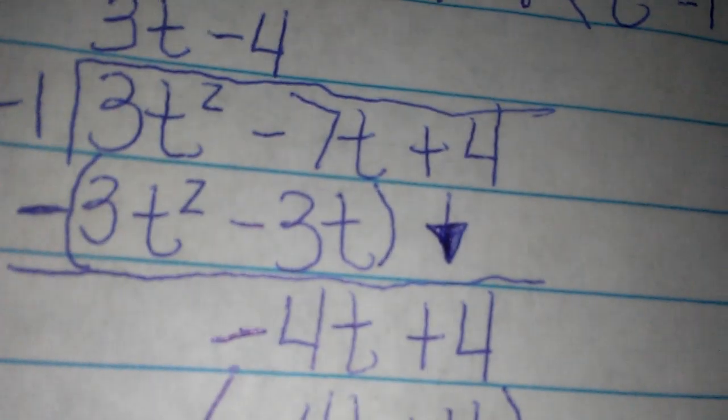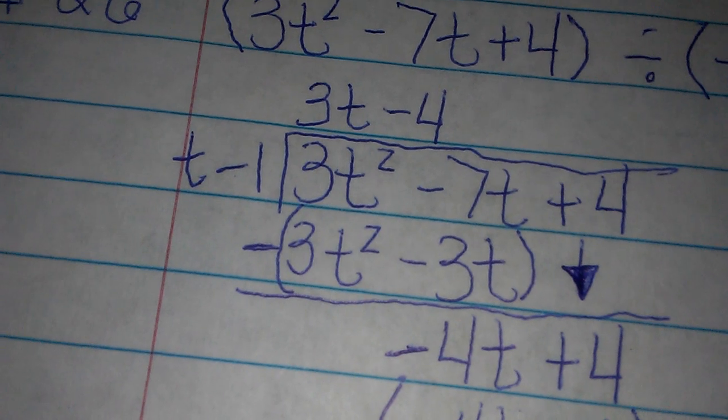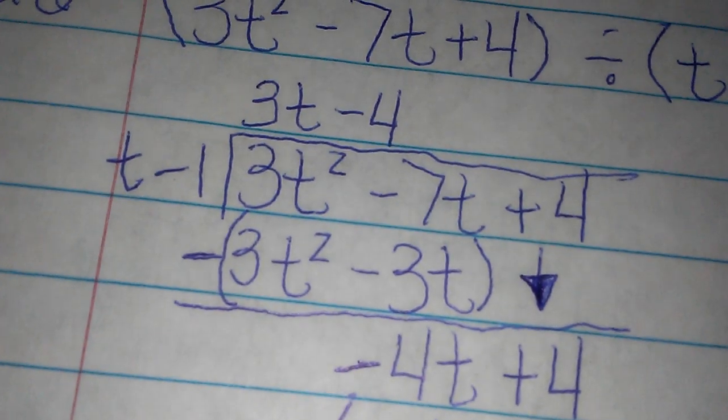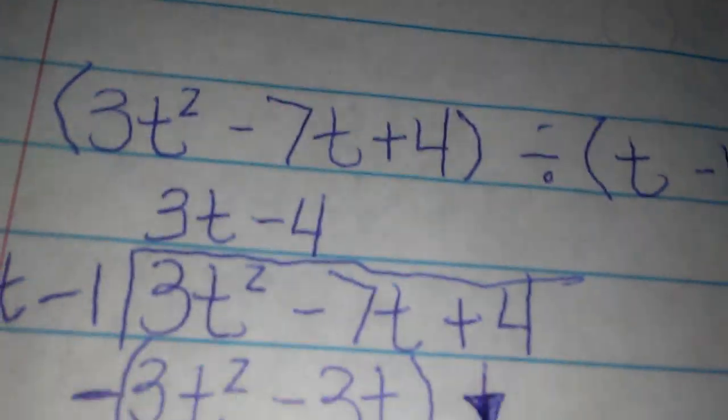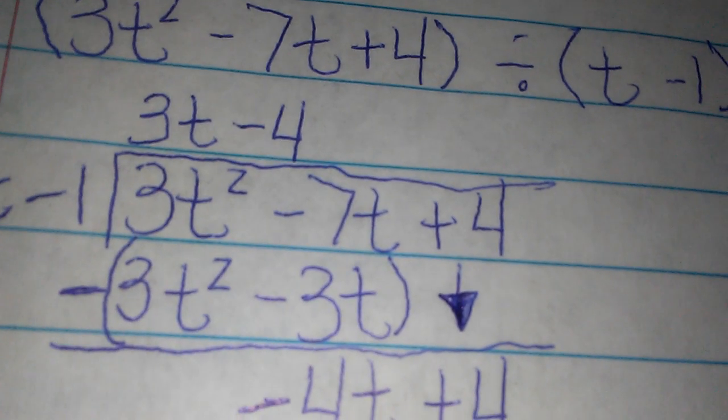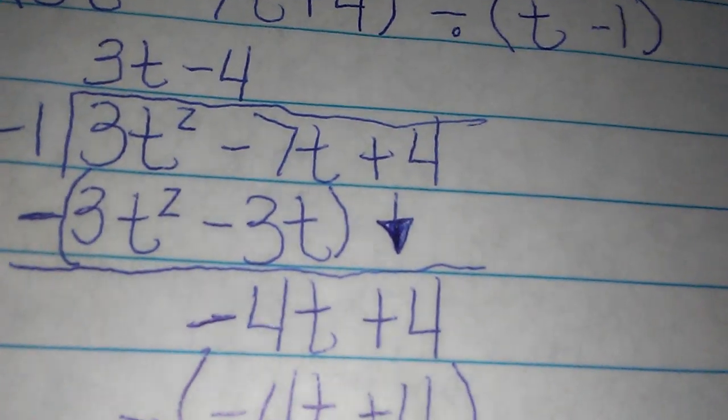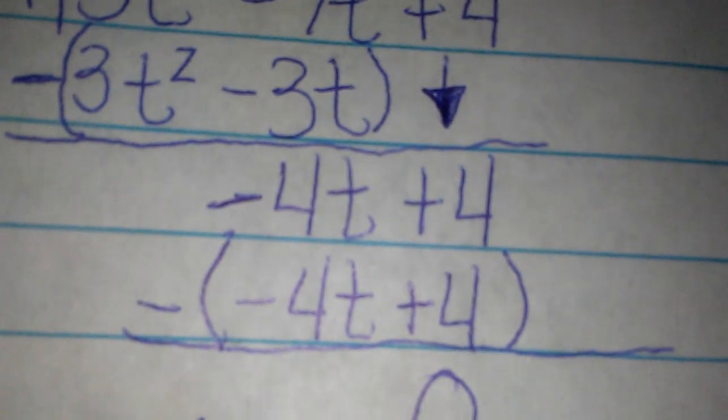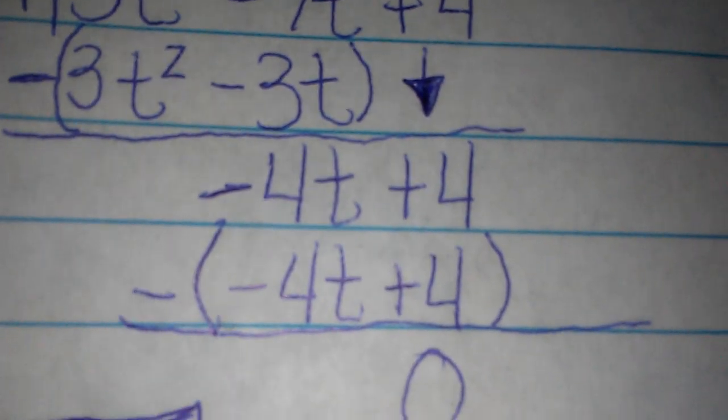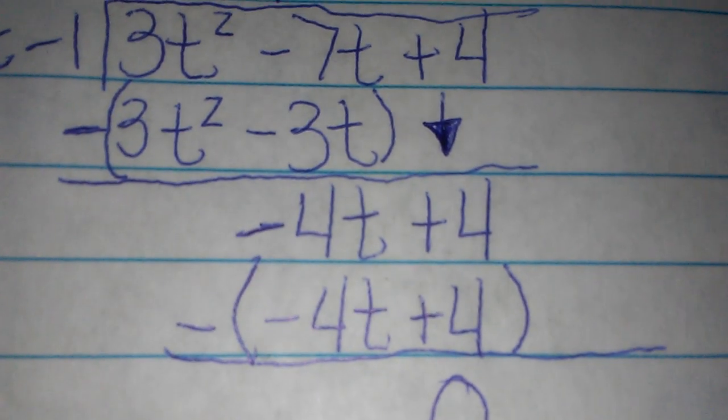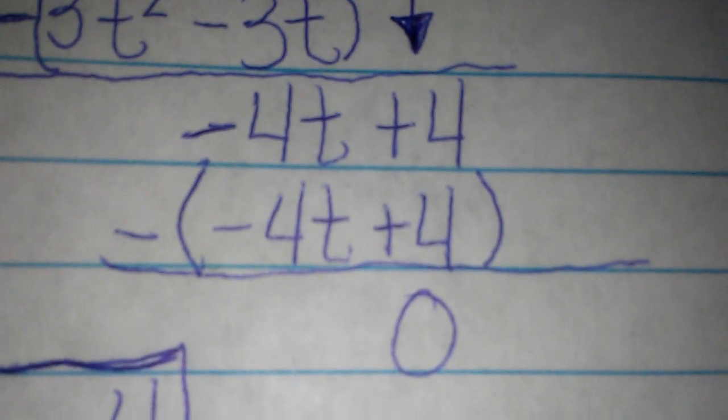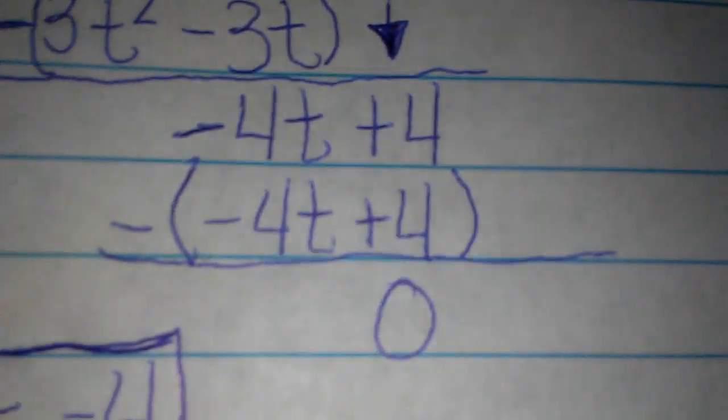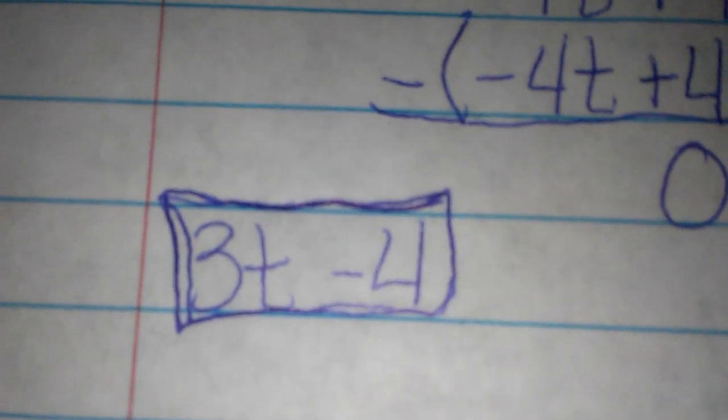And then for negative 4t, t would go into negative 4t negative 4 times, as you can see right here. So I took t times negative 4, and then take all of that minus negative 4t plus 4, and I got 0. So that was my final answer, 3t minus 4.